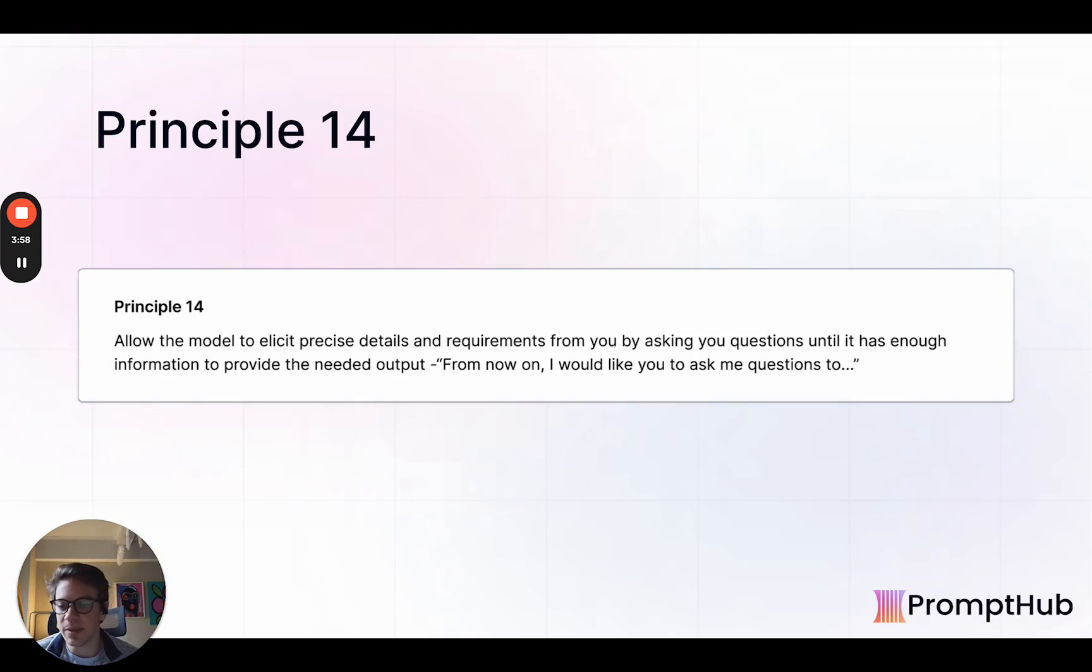I thought this one was really interesting. It's basically helping the model help you. So allowing it to get precise details and requirements from you by asking questions until it has enough information to give you an output. So this is obviously tailored much more towards chat or conversation experiences. But it's really just building up proper context for the model. So you don't have to do it all in one go. And then the model can keep asking questions until it has what it thinks all it needs to complete the task. And again, we think this is a really helpful way if you're going to be building any sort of chat experience, having this happen in the back end or in the front end can lead to better results.